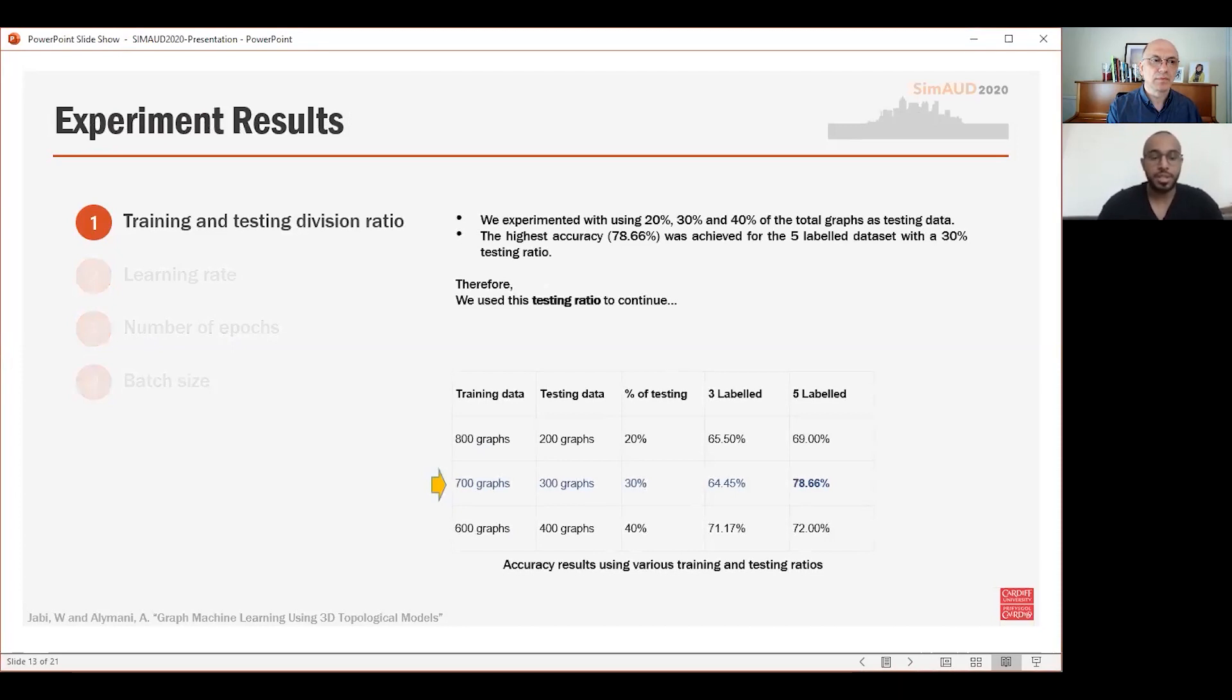In the training and testing division ratio, we experimented with using 20%, 30%, and 40% of the total graphs as testing data. So, for example, in the case of 20%, we divide the 1000 graphs into 800 graphs for training and 200 graphs for testing, and so on with the 30% and 40%. The highest accuracy, 78.66%, was achieved for the 5-label dataset with the 30% testing ratio. So we used this 30% setting to continue with our sensitivity analysis.